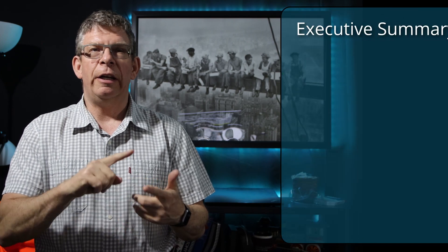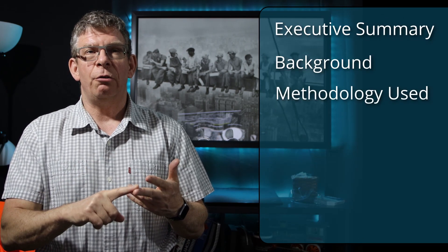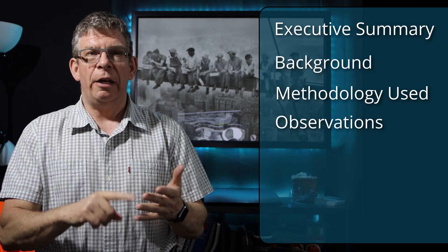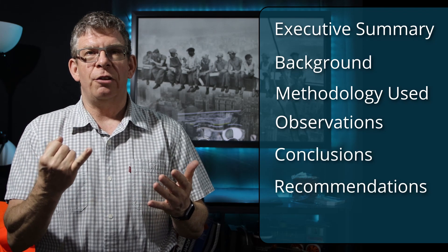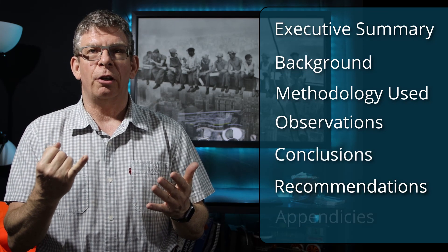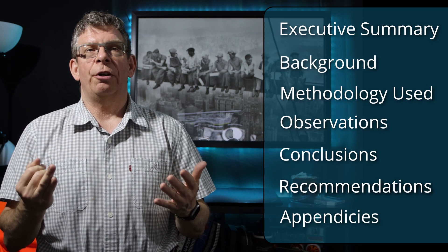So the components you need to have — there are actually seven of them. You need to have the executive summary, a background, the methodology that was used, the observations that you made, the conclusions that you drew, the recommendations you're going to make as a result of those conclusions, and of course appendices, where you store all your data.